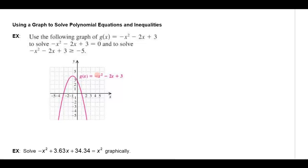So when I plot all the ordered pairs that make this function true, I get this upside down parabola. And it asks me to use this graph to solve where the negative x squared minus 2x plus 3 equals 0. Well, if I compare this equation with what I have up here, what I'm doing is I'm letting g of x be 0, right?